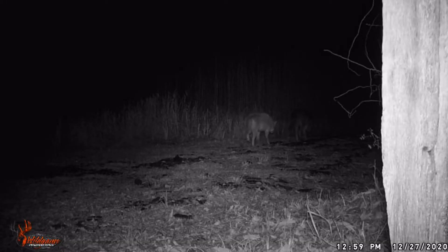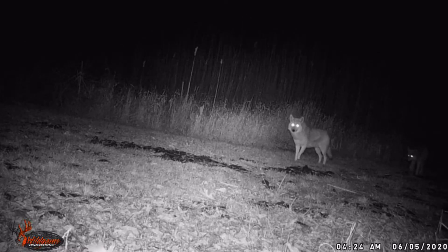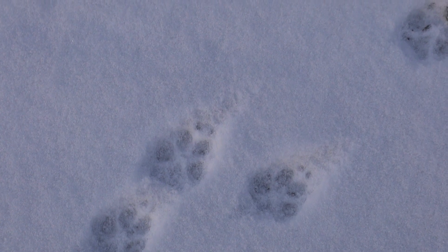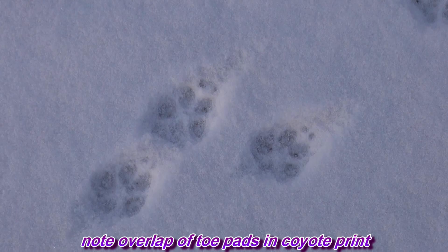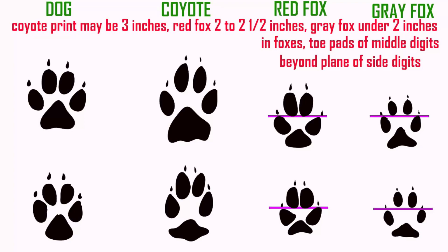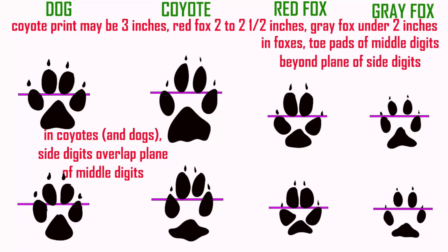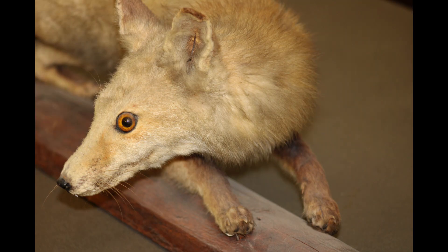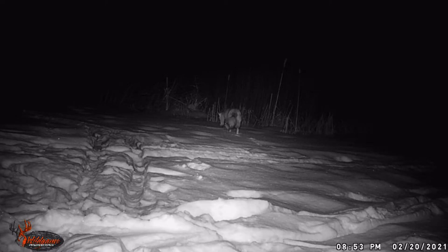While these dog prints are similar, there are also some differences, such as size. The coyote print may be three inches, the red fox two to two and a half inches, and the gray fox under two inches. In coyotes and domestic dogs, the side digits overlap the plane of the middle digits — notice the pink line cannot fit between the front two digits and the lateral two digits without crossing through the lateral two digits. In contrast, in foxes, the two middle digits are farther forward, and that pink line can fit in the space between the two middle digits in front and the two lateral digits behind. One can also notice a small middle lobe on the back of the heel pad of coyotes, and gray foxes may partially retract their claws. In fine mud, one might see hairs evident on the hairy footprints of gray foxes.